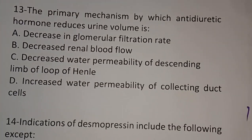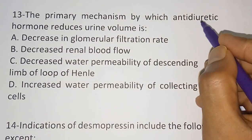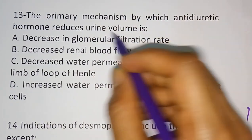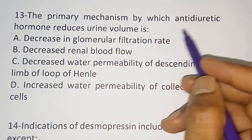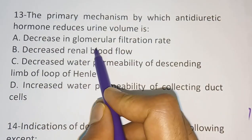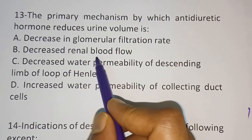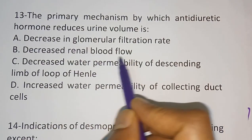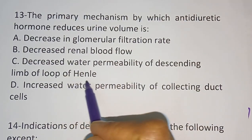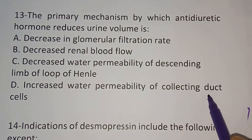Question number thirteen: The primary mechanism by which antidiuretic hormone (ADH) reduces urine volume is? Option A: Decrease in glomerular filtration rate. Option B: Decreased renal blood flow. Option C: Decreased water permeability of the descending limb of loop of Henle. Option D: Increased water permeability of collecting duct cells. The correct answer is Option D — increased water permeability of collecting duct cells.